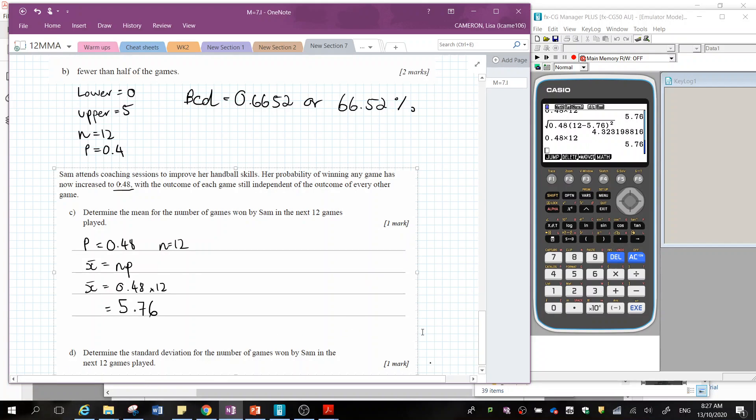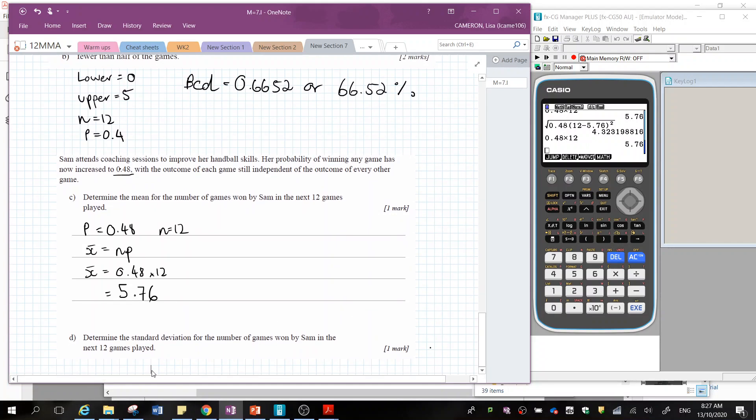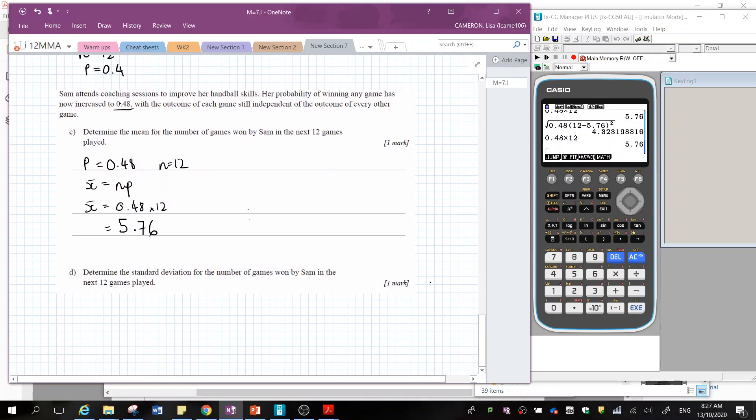Okay, next one we're going to look at is the standard deviation. Now standard deviation is just... That's my little... Okay. So standard deviation of our random variable x is given by the square root of the variance of x. Now in binomial distribution, we're given that the variance is the number of trials multiplied by the probability times by 1 minus the probability. So I'm going to do that all in one step to save myself a bit of time.